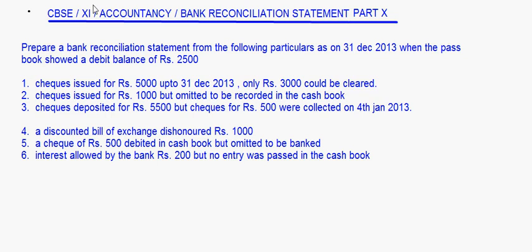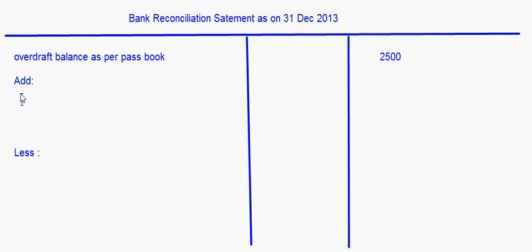Now let's take up the first one: checks issued for Rs. 5000. Up to 31 December 2013, only Rs. 3000 could be cleared, meaning checks amounting to Rs. 2000 could not be cleared. When checks are issued, the overdraft balance as per the cashbook goes up. The cashbook overdraft is more by Rs. 2000, so this should be added. I'll write: Checks issued but not cleared — Rs. 2000.